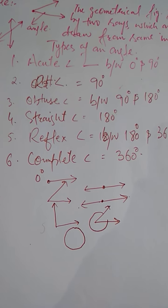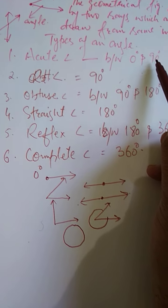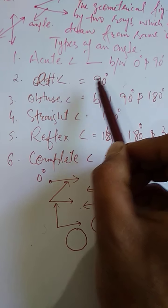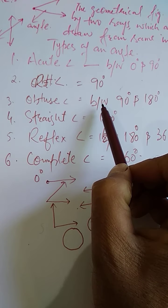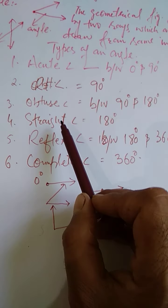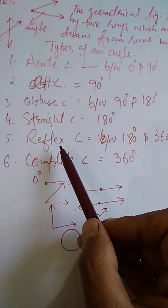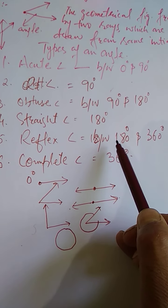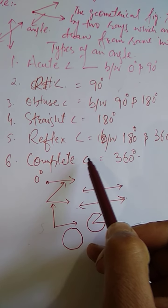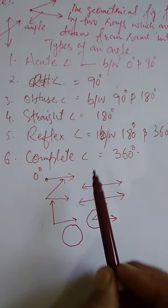Acute angle is the angle whose measure lies between 0 degrees and 90 degrees. Right angle is the angle whose measure is equal to 90 degrees. Obtuse angle is the angle whose measure lies between 90 degrees and 180 degrees. Straight angle is the angle whose measure is equal to 180 degrees. Reflex angle is the angle whose measure lies between 180 and 360 degrees. Complete angle is the angle whose measure is equal to 360 degrees.